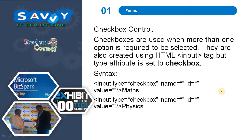Checkbox control: checkboxes are used when more than one option is required to be selected. They are also created using the HTML input tag but the type attribute is set to 'checkbox'. Here, the names can be the same but the IDs are different for each input type.